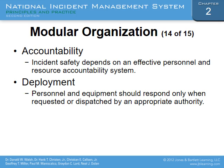Two key factors stressed in NIMS are accountability and deployment. Accountability means incident safety depends on an effective personnel and resource accountability system — knowing who is there and who is doing what, without unchecked freelancing. Deployment means personnel and equipment should respond only when requested or dispatched by the appropriate authority. Self-dispatching is not ideal because if you don't know someone is there, you lose accountability, which can lead to trouble.